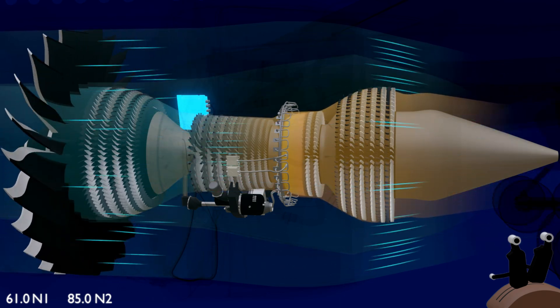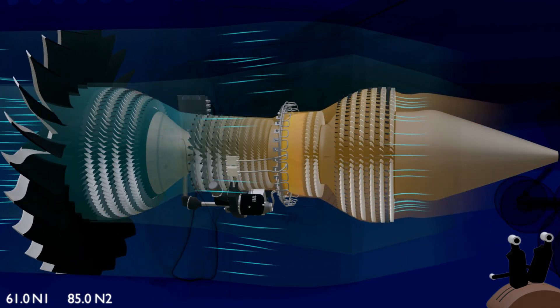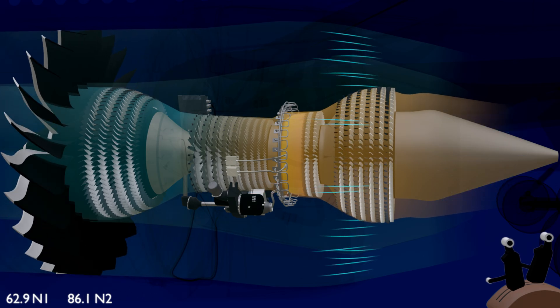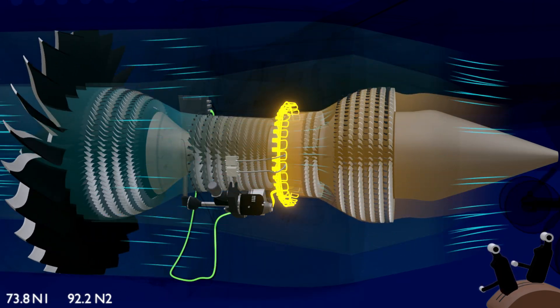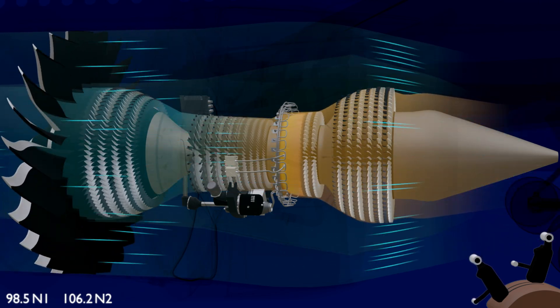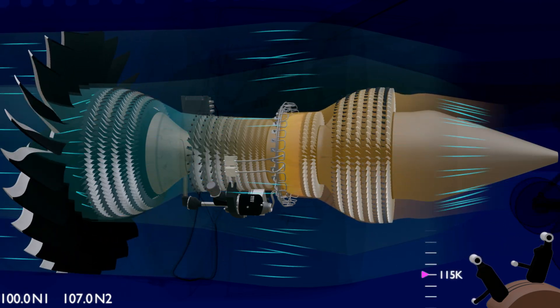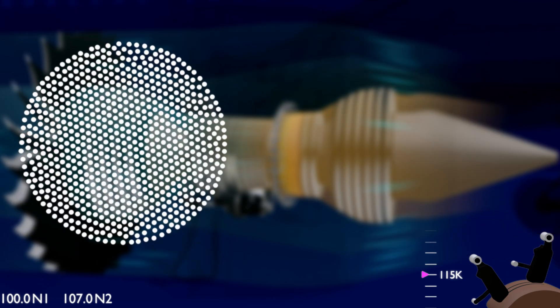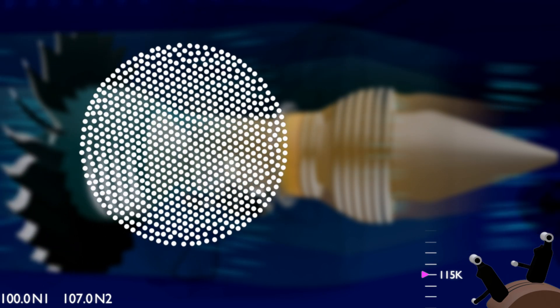The thrust of the engine is controlled by the electronic engine control. Advancing the thrust lever to full forward position, the EEC increases the fuel flow in the combustion chamber and drives up the engine speed, thereby increasing the airflow to reach the engine's rated thrust. For the engine to maintain the rated thrust, it needs to maintain a constant mass flow rate.